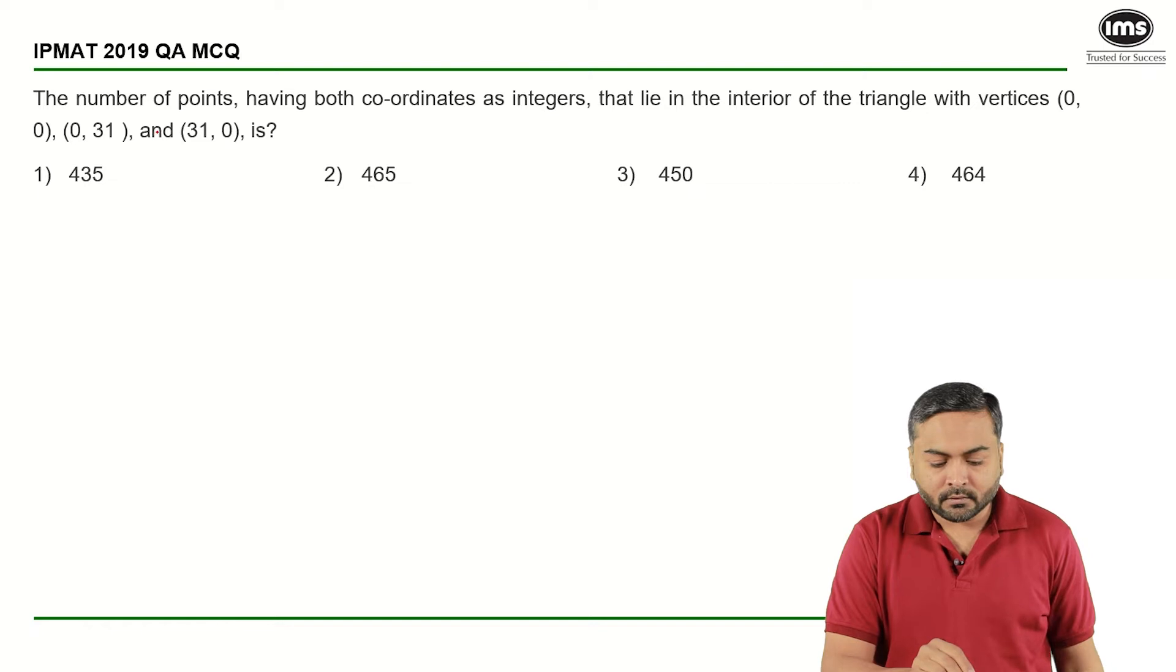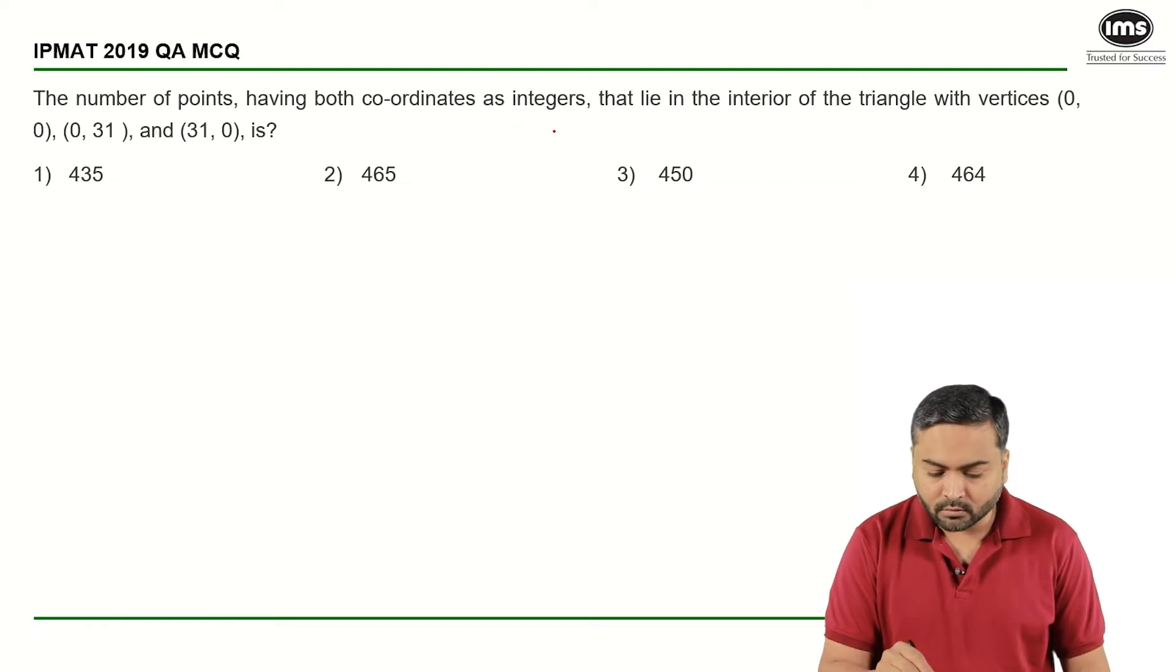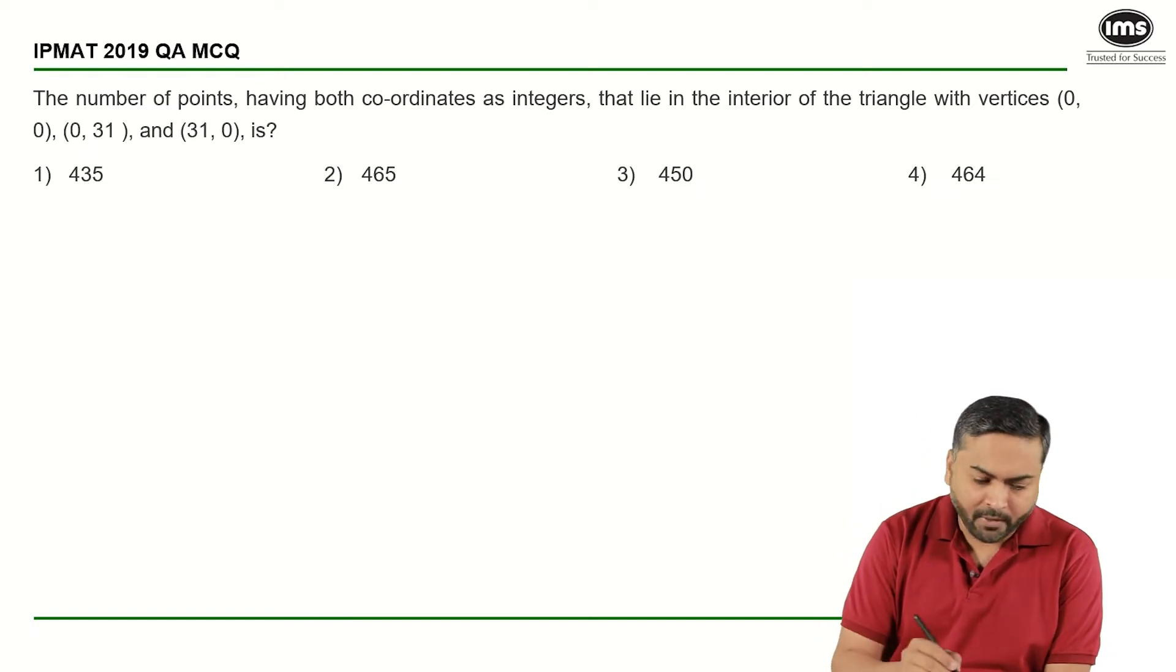So what is given to us? The number of points having both coordinates as integers that lie in the interior of the triangle with vertices (0,0), (0,31), and (31,0). So basically there will be a triangle that will be formed.